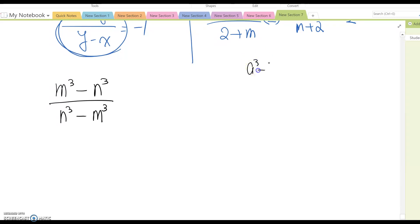Last time we talked about the factoring form of a cube minus b cube, which is a minus b times a square plus ab plus b square. So this one you can rewrite as m minus n times m square plus mn plus n square. This case becomes n minus m times n square plus nm plus m square.